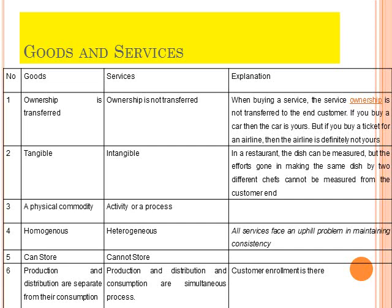The fifth difference is goods can be stored; services cannot be stored. The sixth difference is that goods production and distribution are separate from their consumption, whereas services production, distribution and consumption are a simultaneous process. When you purchase a chocolate, it was made in a different place at a different time. But when you consult a doctor, the doctor provides the service and you receive it at the same time.